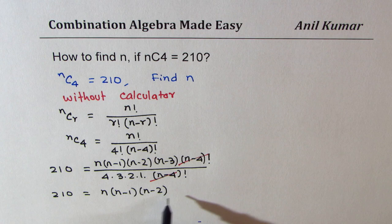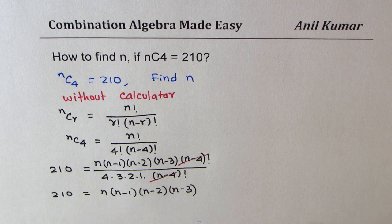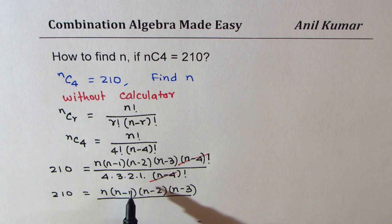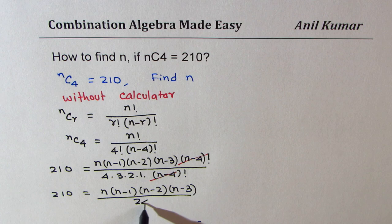So these are 4 numbers which when multiplied should give you 210, and the denominator here is 4 times 3 is 12 times 2 is 24. So that's what it is.